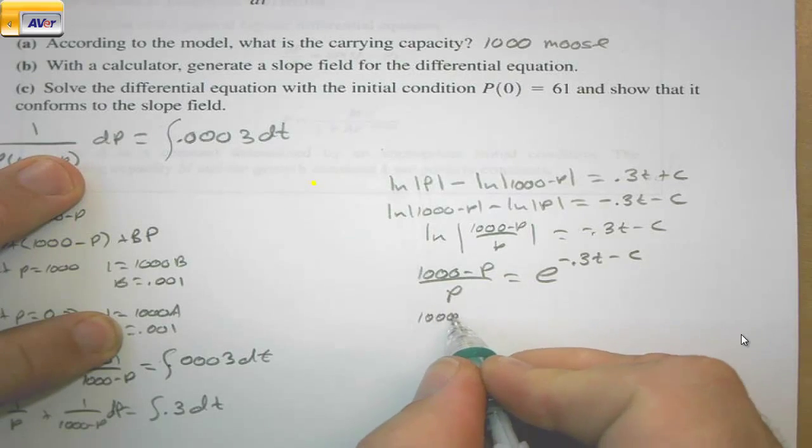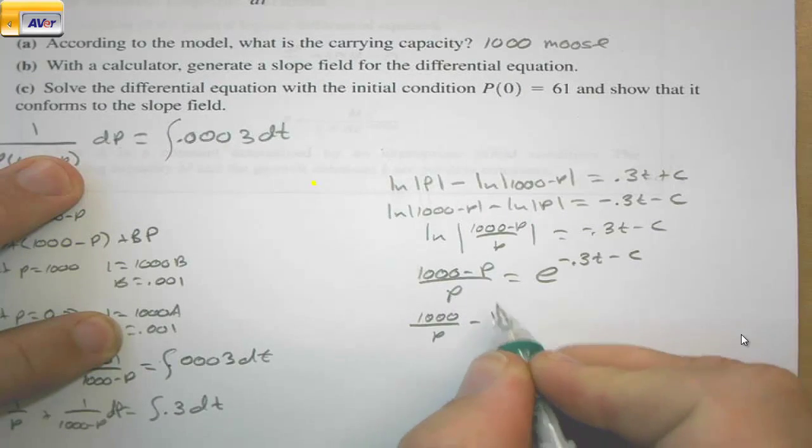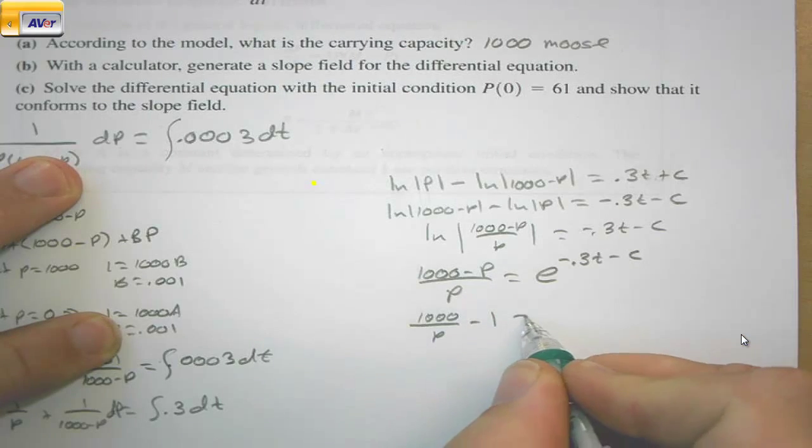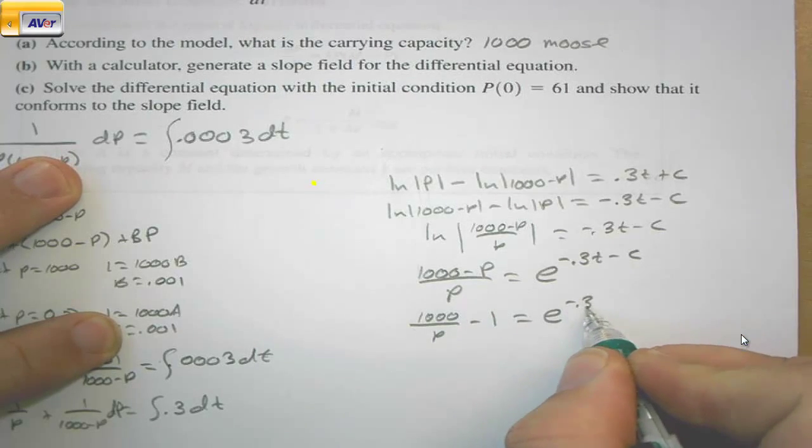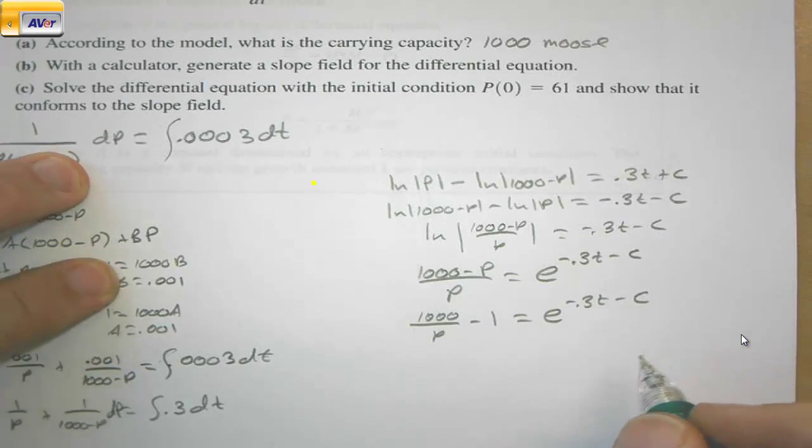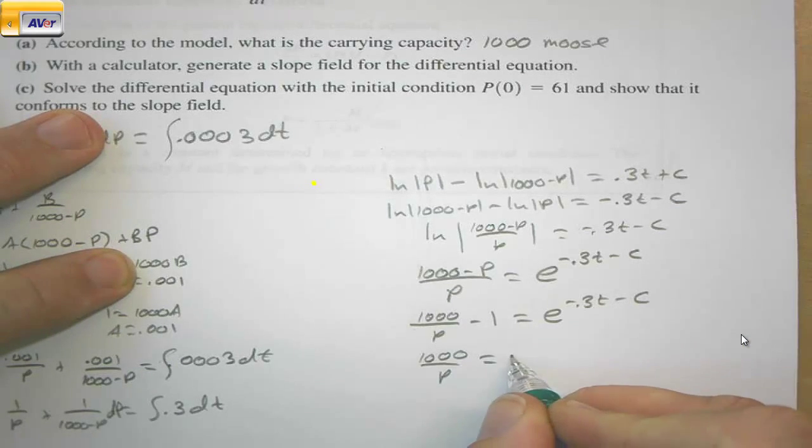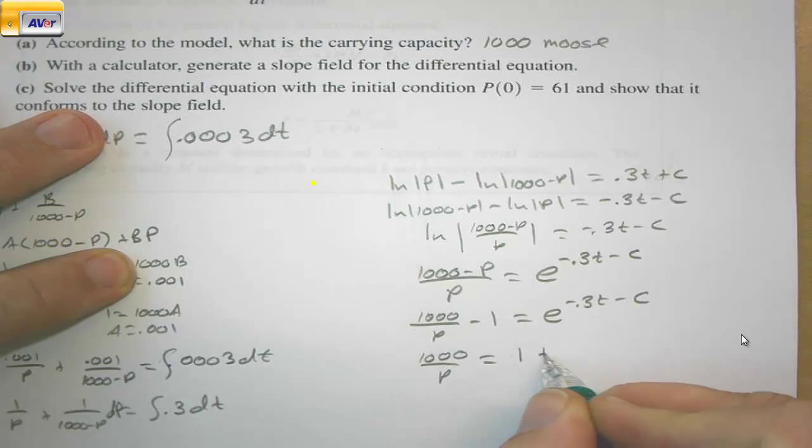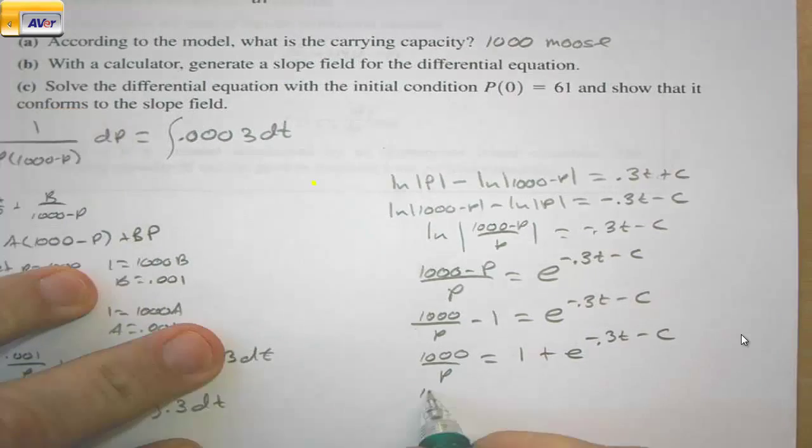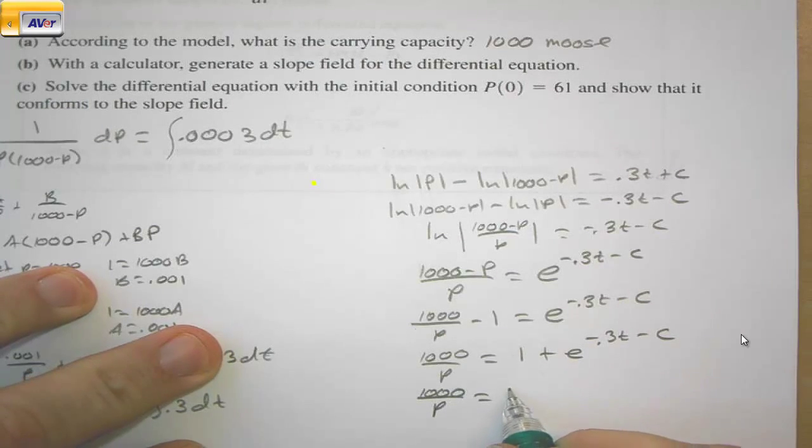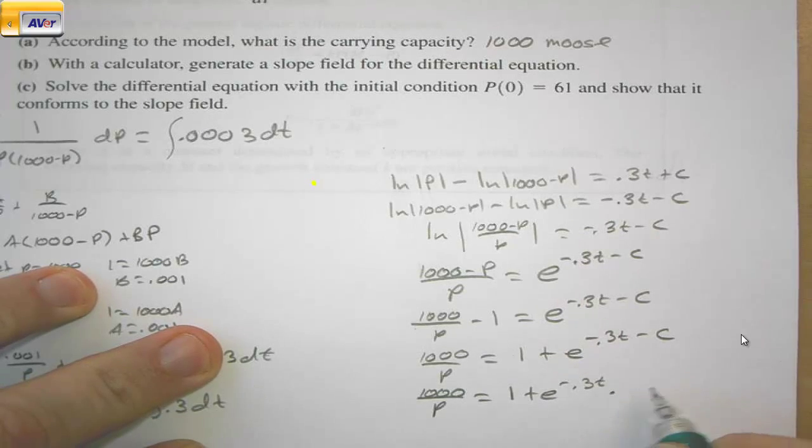We have 1000/P - 1 because you have -P/P = e^(-0.3t - C). So 1000/P = 1 + e^(-0.3t - C). We have 1000/P equals, we can write 1 + e^(-0.3t) times e^(-C).